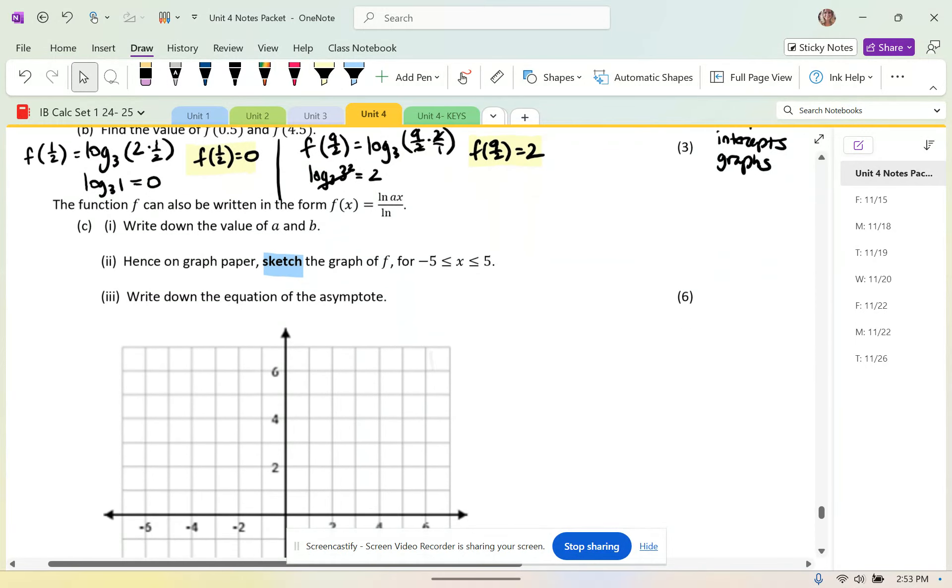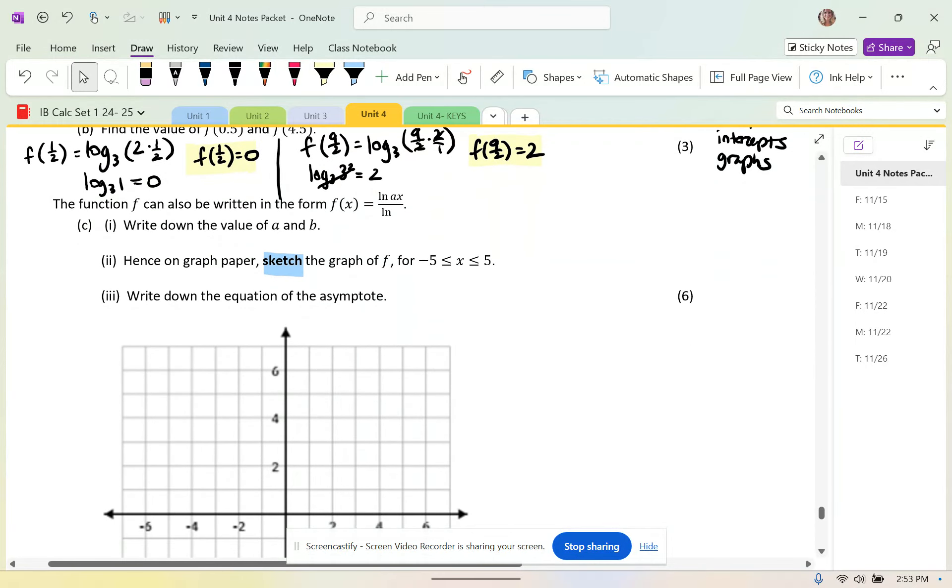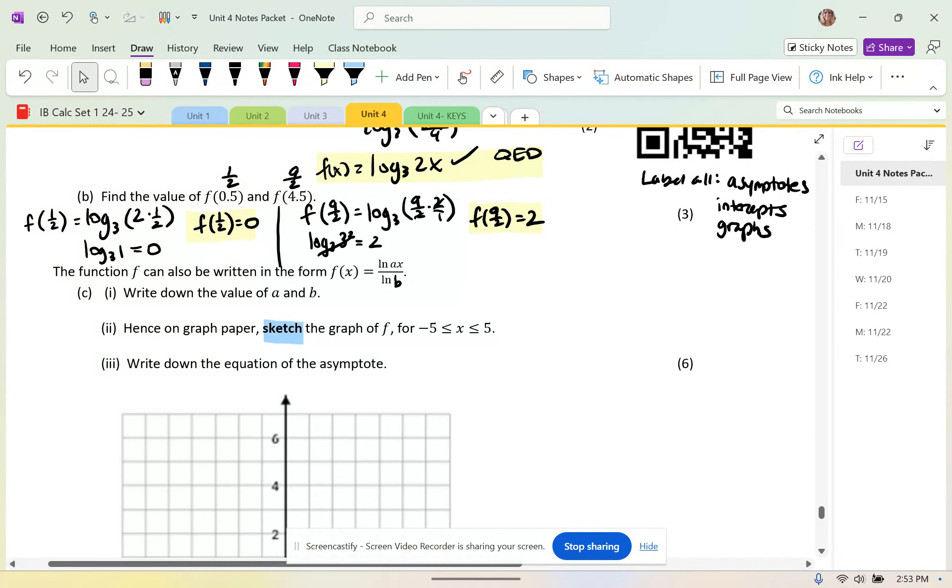It says the function can also, there's the vacuum, the function can also be written in the form f of x equals the ln of ax over the ln of b. The b didn't print. Write down the value of a and b. So it looks like I'm trying to change from a log base 3 of 2x into an ln, which is really just a log base e. So I'm going to use my change of base formula. I've got the ln of, and then we have the old argument up top, and the base down below. So now I have a is 2, b is 3.